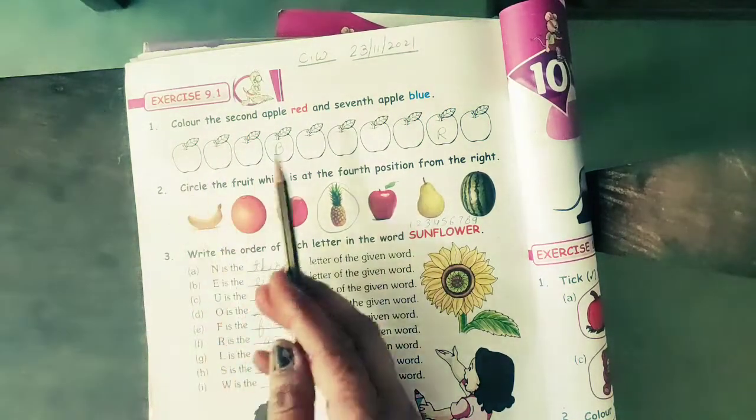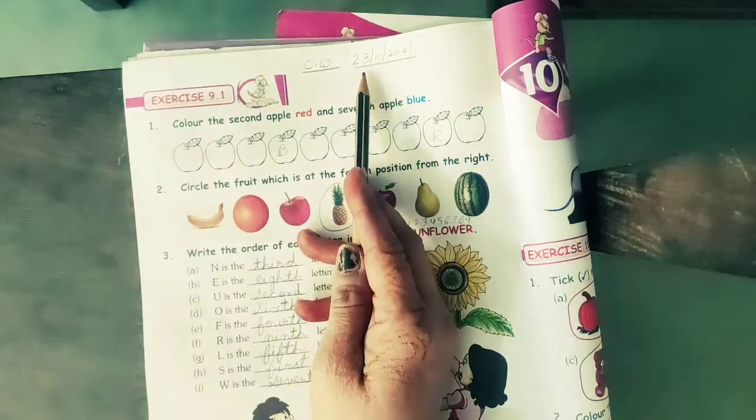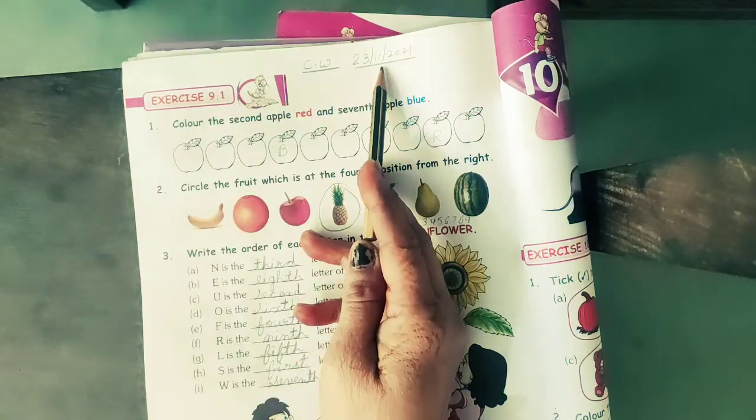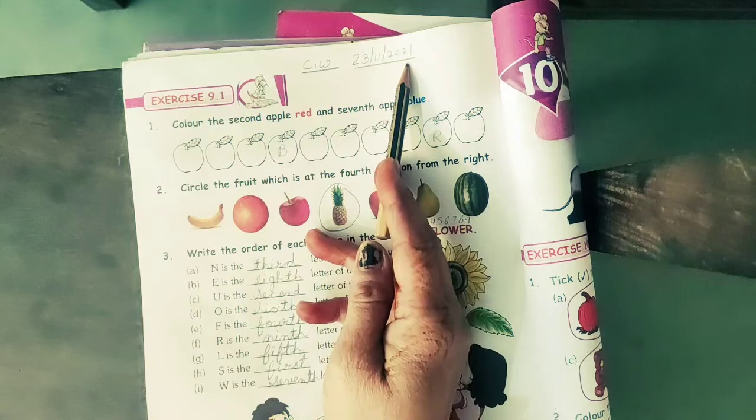Exercise number 9.1. Today's date is 23rd of November, 11th month's year 2021.